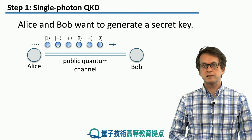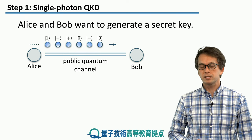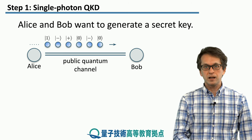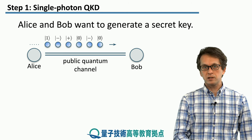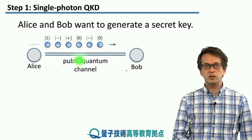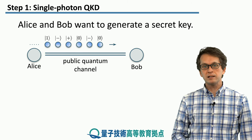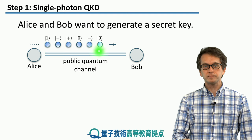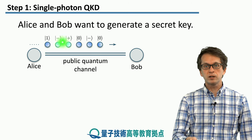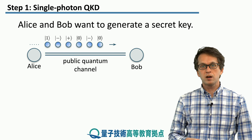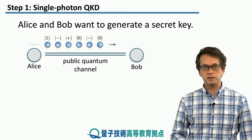Recall that in the previous lesson we learned about the BB84 single photon-based quantum key distribution protocol. To remind you how it works, let's do a little overview. We have Alice and Bob that use a public quantum channel to establish a secret key. What Alice does is she prepares qubits in four different states at random. The states can be either 0, 1, or they can be plus or minus.